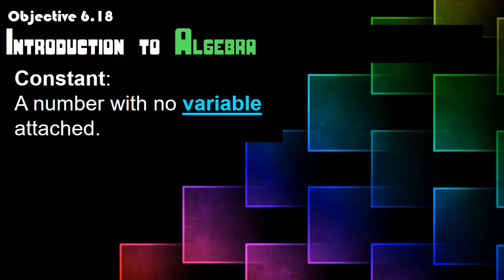So we have a constant. The constant is a number with no variable attached. In our math sentences or expressions, you will just see a number that's called a constant. It means that number doesn't change — it's consistently that number.